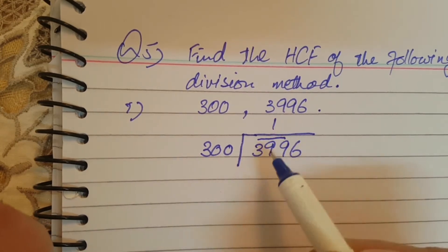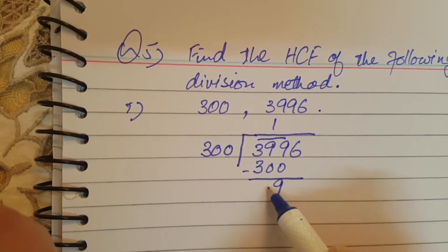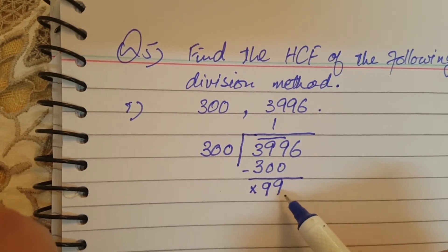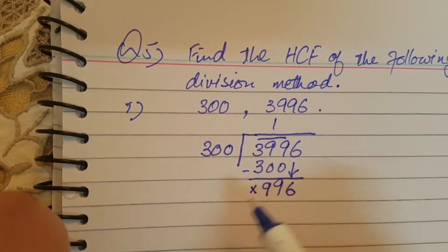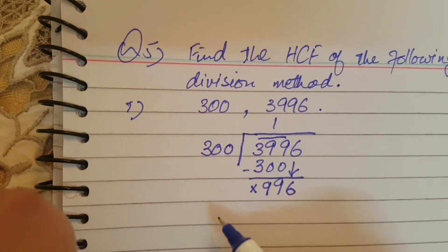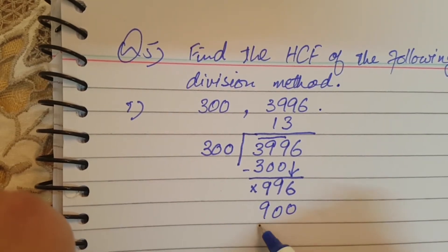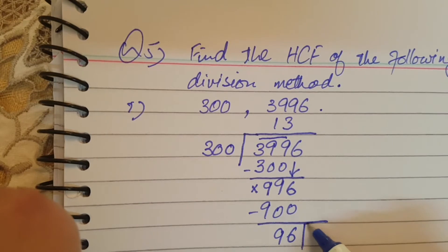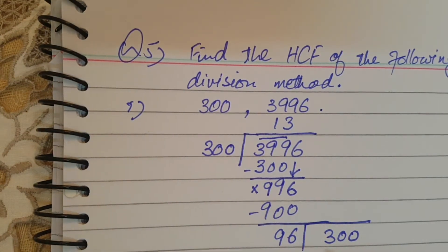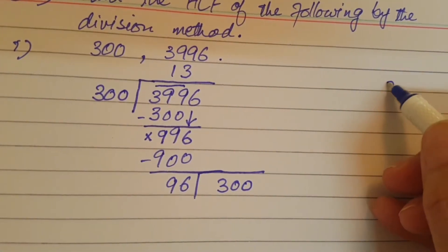Since 399 is greater than 300, we divide 3996 by 300. 300 one time is 300; subtract to get 99, then bring down 6 to get 996. 996 divided by 300: 300 three times is 900, leaving remainder 96. Since 96 is smaller than 300, we bring the first divisor 300 down as the new dividend and divide by 96.